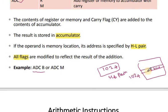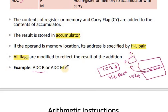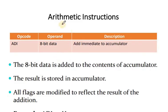So the 8-bit value from the register is added along with the carry flag to the accumulator, and stored back to the accumulator. Next, we have another instruction: ADI — Add Immediate.